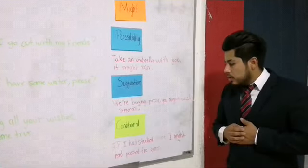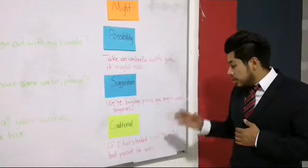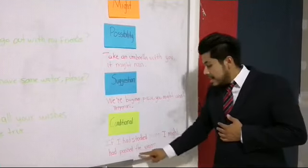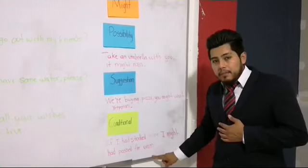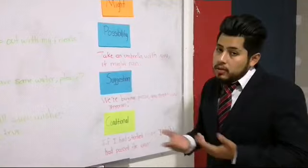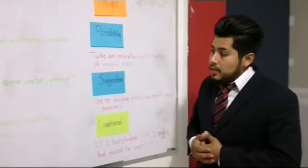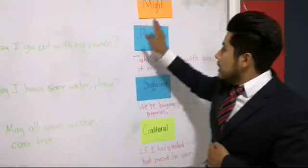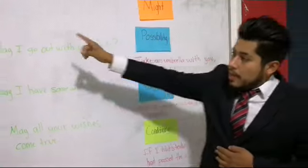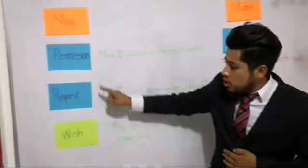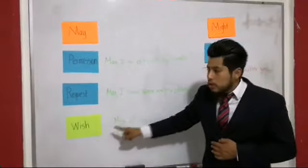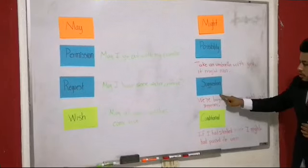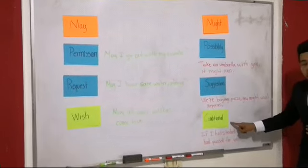Conditional: If I had studied more, I might have passed the exam. I didn't study, so I didn't pass the exam. So this is the use of may and might. May: permission, request, and wish. Might: possibility, suggestion, conditional.